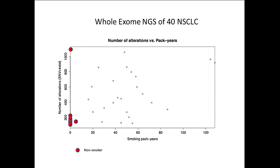We did a study of four whole exomes for lung cancer. Most smokers have somewhere between 200 and 1,000 variants after filtering out SNPs. As a clinician who has to interpret this data, it's nearly impossible to interpret everything — you have to make assumptions to whittle this number down to something reasonable. It's a huge challenge.